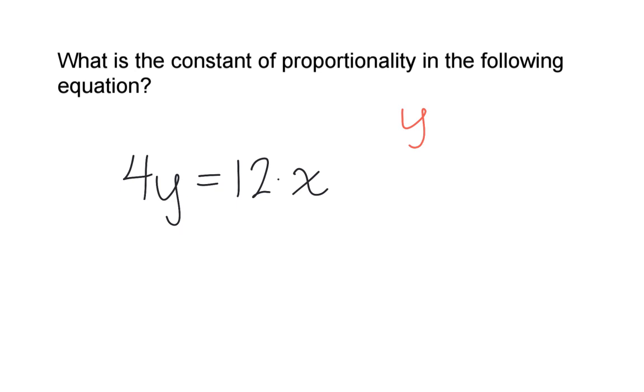If we have it in the form y equals k times x, that k value would be the constant of proportionality. That's the number we multiply the x value by to get to y. If we manipulate the equation 4y equals 12x, we'll be able to easily see the constant of proportionality.